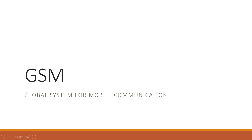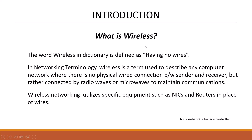GSM — the full form of GSM is Global System for Mobile Communication. Now let's get into some basics. What is wireless? The word wireless in the dictionary is defined as having no wires. But in networking terminology, wireless is a term used to describe any computer network where there is no physical wire connection between sender and receiver, but it uses radio or microwave to maintain communication. It utilizes specific equipment such as antennas and routers in place of wires.